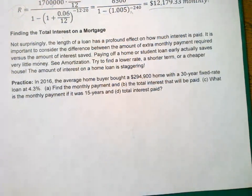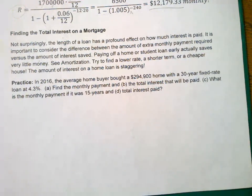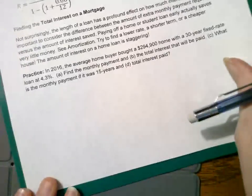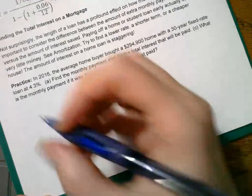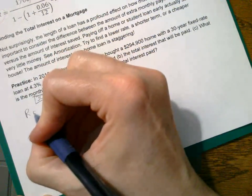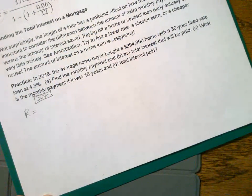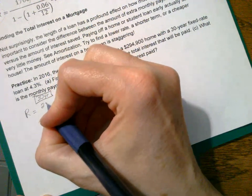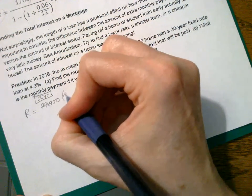Let's practice. In 2016, the average home buyer bought a $294,000 home with a 30-year fixed rate at 4.3% — that's pretty good, that's the average. Find the monthly payments, the total amount of interest paid, and what the monthly payment would be if it were 15 years instead of 30, and what the total interest would be there. It's a nice comparison problem for 15 versus 30. There is no down payment, so the principal is what it is. These are just the basics.